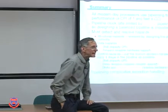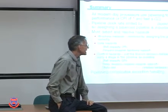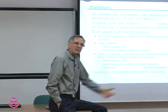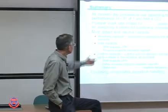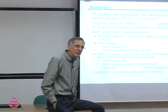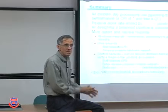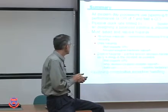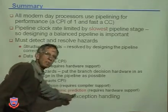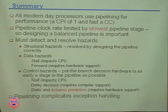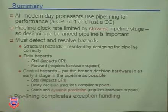Control hazards are the ones we spent a lot of time on. We place branch decision hardware as early as possible to reduce the penalty. To get closer to zero penalty, options include stalling, predicting, or using a delayed decision via compiler reordering. Prediction can be static or dynamic — dynamic prediction in hardware makes intelligent guesses and achieves very high accuracy rates.